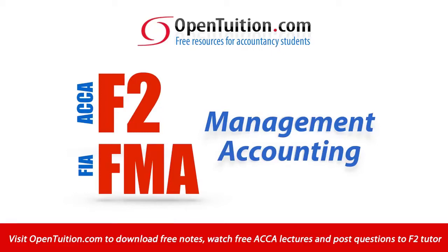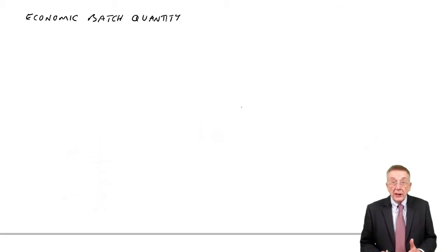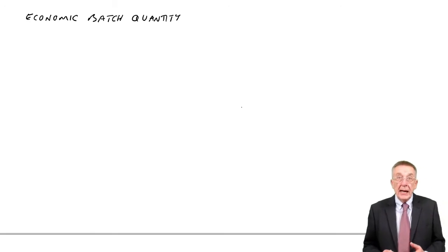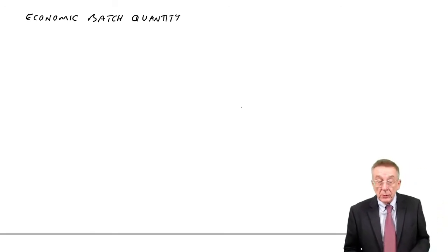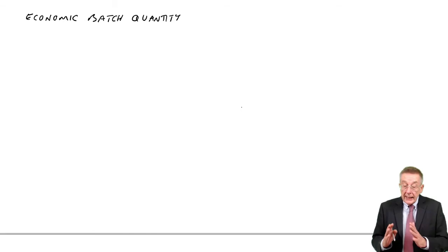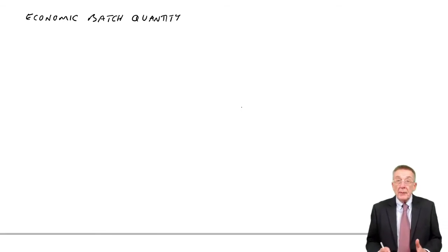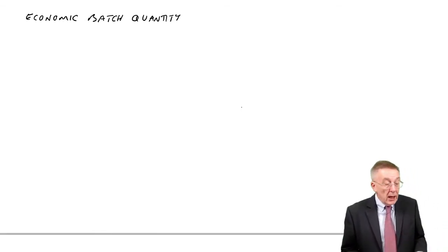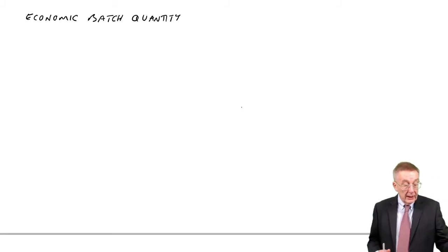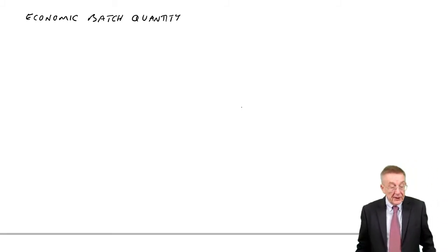This is a lecture from Open Tuition. To benefit from the lecture, you should download the free lecture notes from opentuition.com. This is the third lecture on Inventory Control, which is Chapter 6 of the free lecture notes of paper F2. And in this one, I want to explain what we mean by the economic batch quantity, which is Section 7 of the chapter.